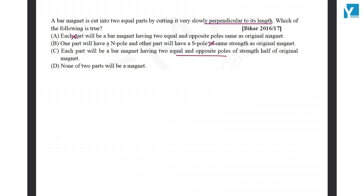Each part will be a bar magnet having two equal and opposite poles, with strength half of its original. This is going to be the correct one. None of the two parts will be a magnet — this is also totally wrong.